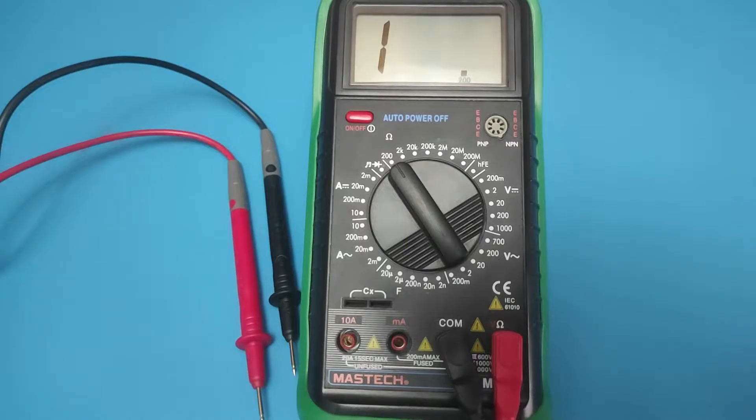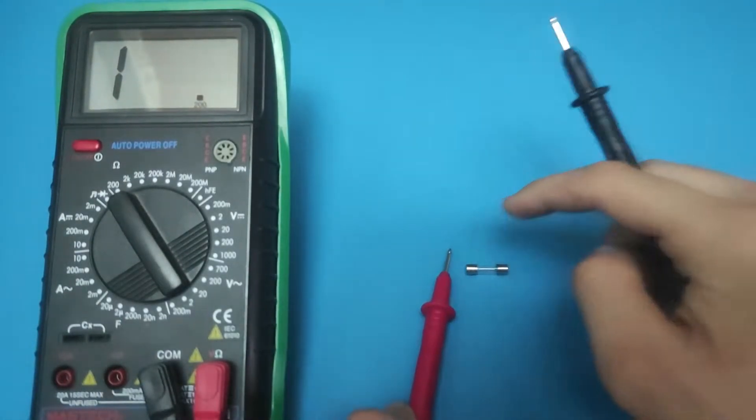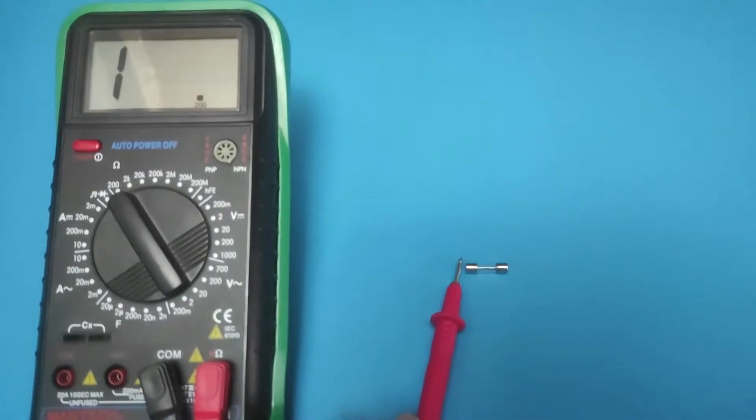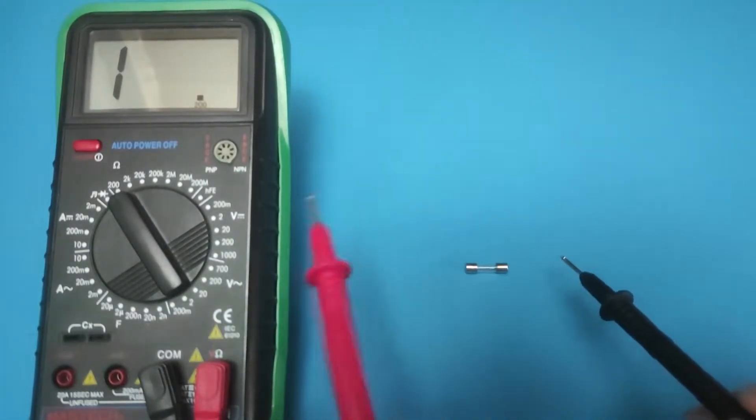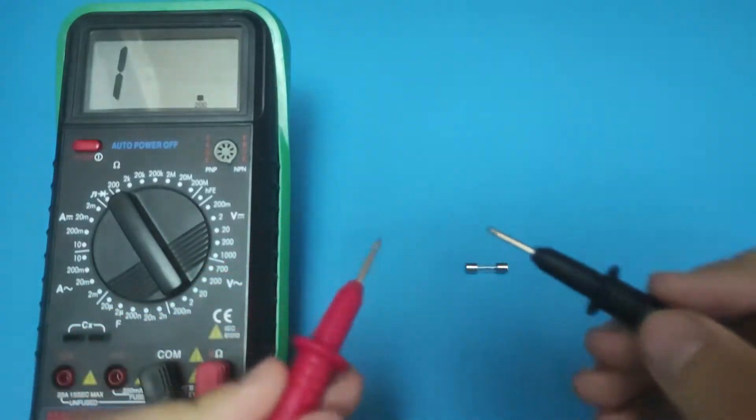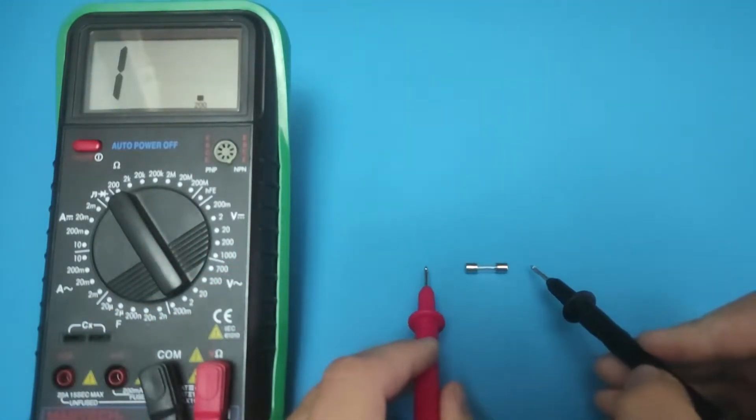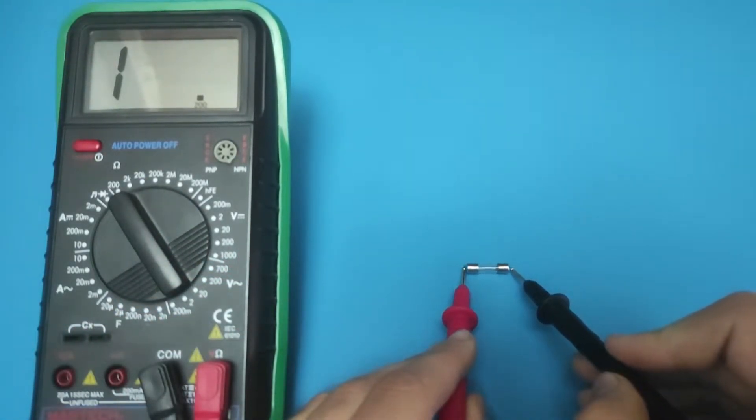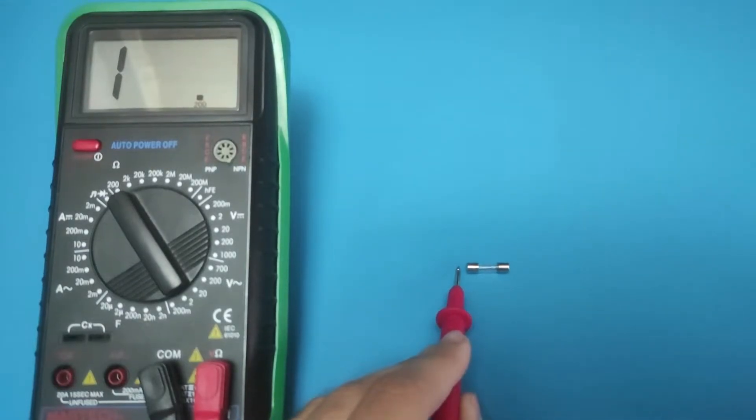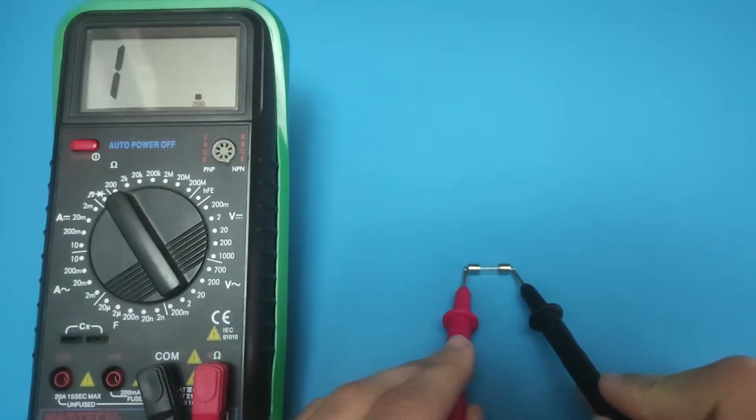Now you simply place the multimeter leads on each contact end of the fuse, regardless of any polarity. If the multimeter is in the ohm setting, good fuses are expected to present you with a resistance value of zero or close to zero. Here we got 0.5 resistance, which is a great result.